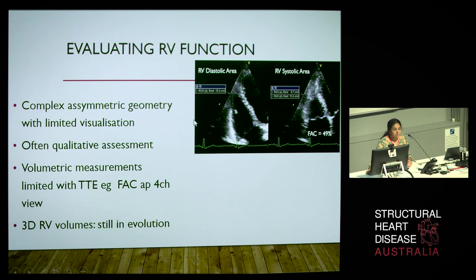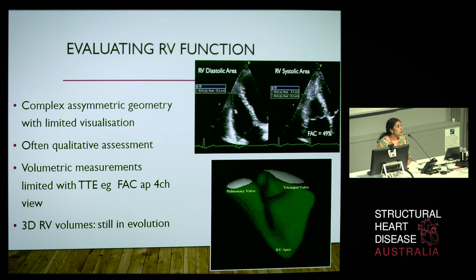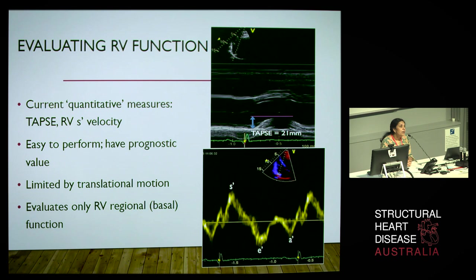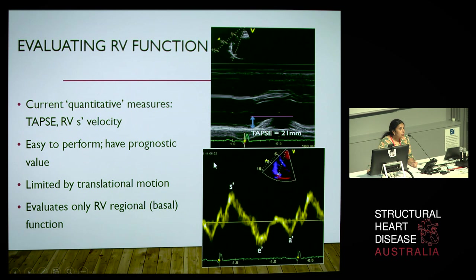With the advent of three-dimensional echocardiography and MRI, we can actually get much more accurate volume-based measurements of the right ventricle. What we typically use in echocardiography is TAPSE, or the tricuspid annular systolic excursion, by placing an M-mode across the lateral annulus. This is quite a reproducible, easy-to-obtain measure, similar to using tissue Doppler and measuring S-prime velocity from the lateral base of the right ventricle.